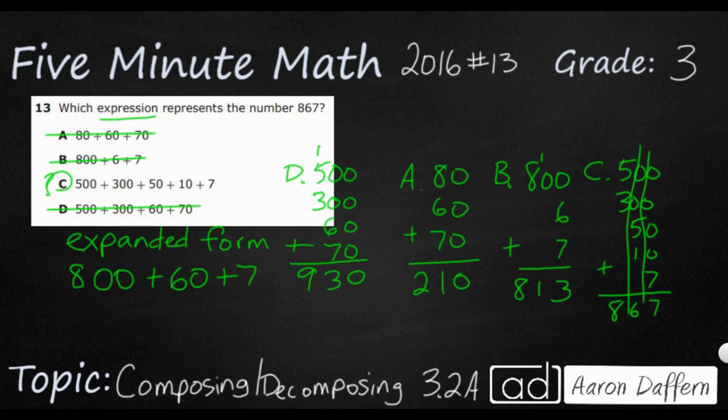But how in the world did they get 500 plus 300 plus 50 plus 10 plus 7? Let me tell you how. Let's start with this right here. 500 plus 300. Even though the simplest way to do expanded form is 800 plus 60 plus 7, what you could do, if you really wanted to, is you can break this down. 5 and 3 make 8, right? And so 500 plus 300 is going to make 800. Using that, I bet you see how we're going to get this 50 and 10. Think of the value of 6. 6 is 5 and 1. It's always good to know how to make numbers with a 5 and a 10. So that's going to be 50 plus 10. So that's where they got that. And then the plus 7, they didn't do anything with. If they wanted to, they could have done a 5 and 2, but they didn't. And that's how we get our answer. We'll see you later.